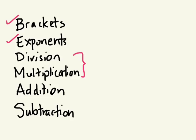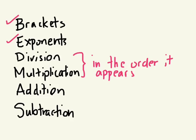Division and multiplication is in the order it appears, and just like we read English left to right, you read math left to right. So if division appears first, you would solve division. If multiplication appears first, you would solve multiplication first.